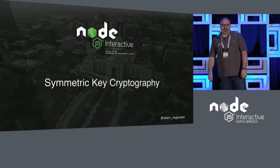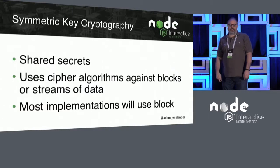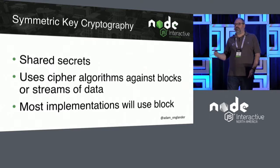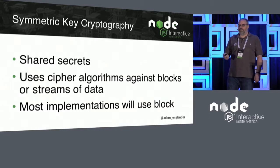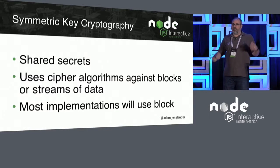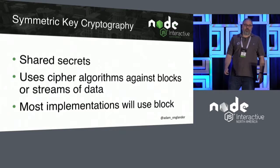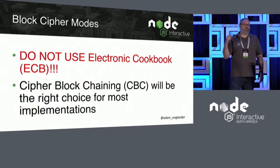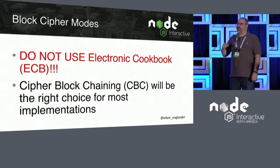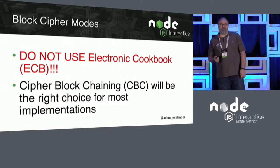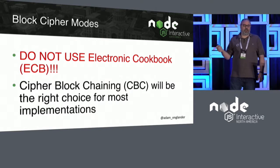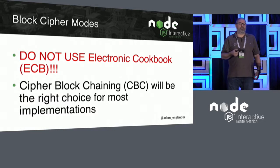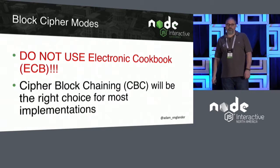Symmetric key cryptography uses shared secrets and cipher algorithms against blocks or streams of data. You're probably using blocks unless you're doing video streaming or audio streaming. Most people are moving blocks of data. Do not use electronic codebook — ECB. It's still everywhere available as an option for backwards compatibility, but do not use it. When you saw the Tux image, that was ECB — it does not use a cipher feedback mode. Cipher block chaining will be the right choice for most implementations, so use CBC when you get the options for your block mode.